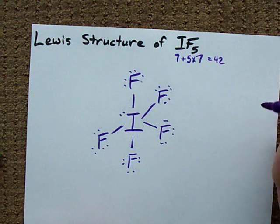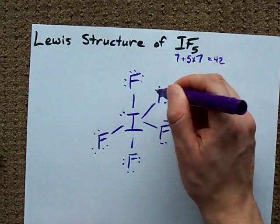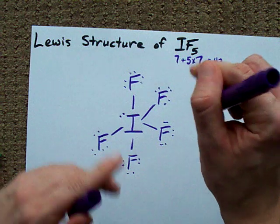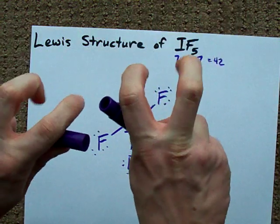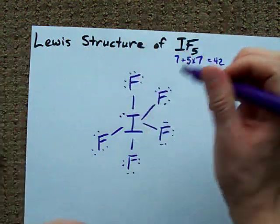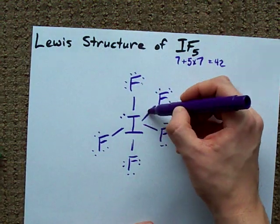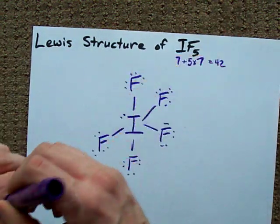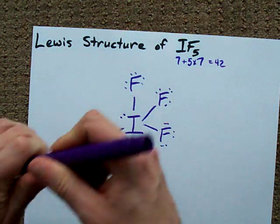Everything has a full octet here — all the F's. Iodine has what's called an expanded octet: 2, 4, 6, 8, 10, 12 electrons around it.